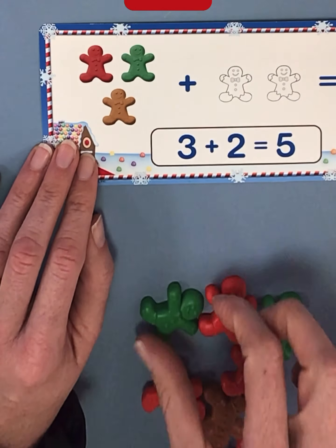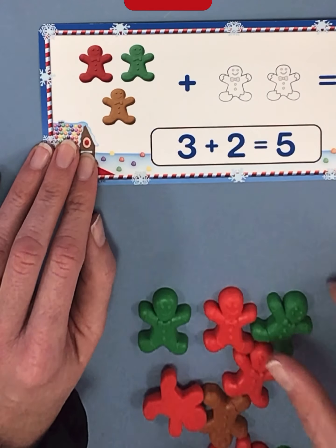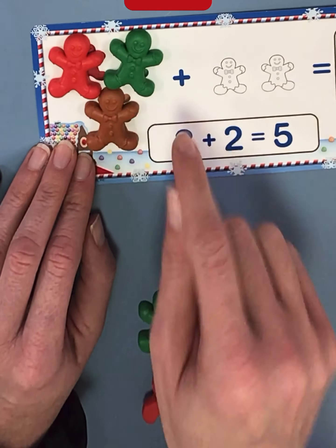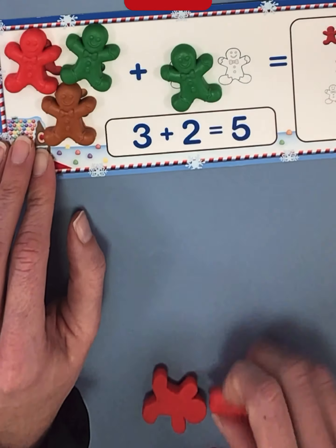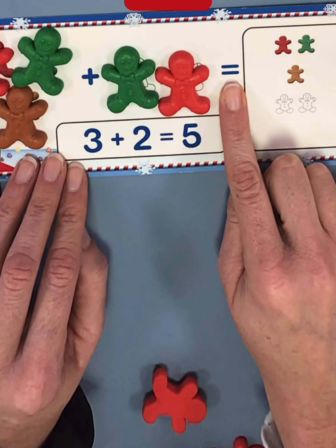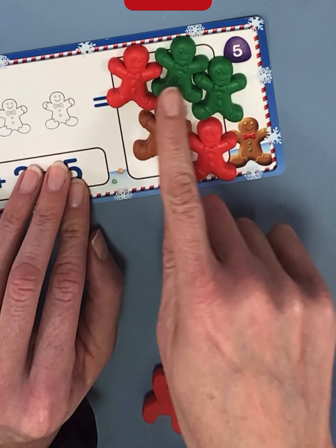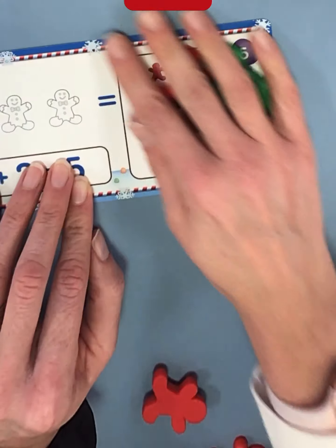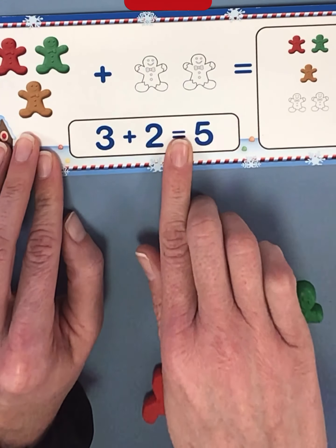Do you think we can do one with even more? Let's try. Let's start with one, two, three, three plus two. Three plus two equals five. Let's read our math sentence. Three plus two equals five.